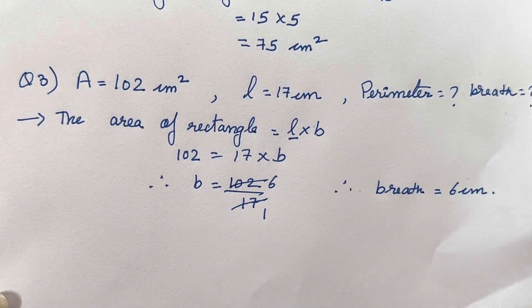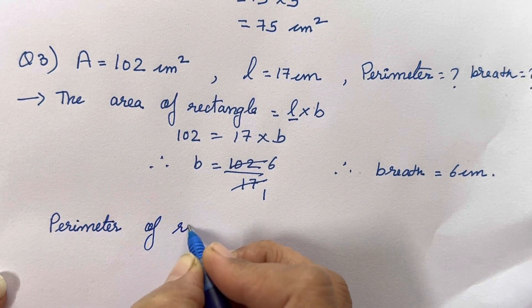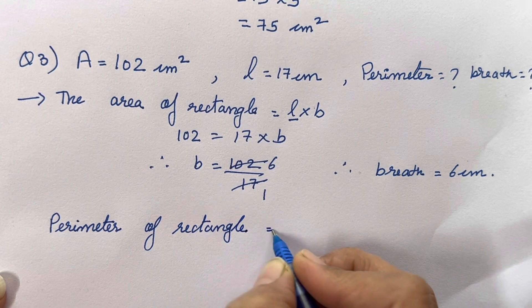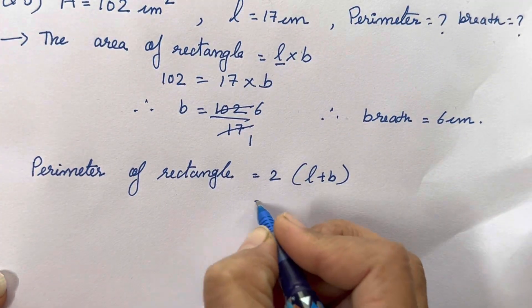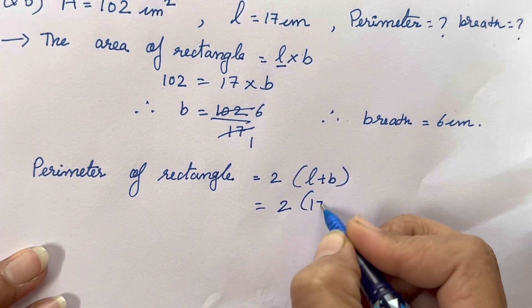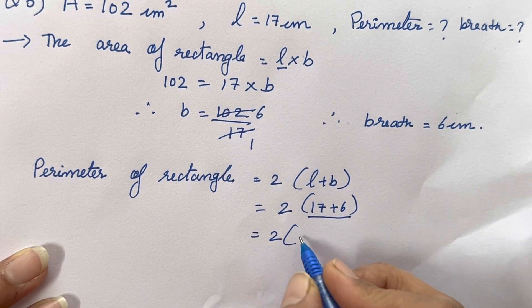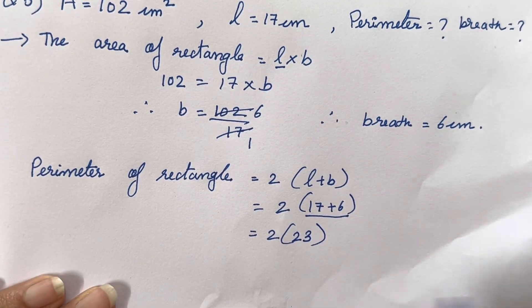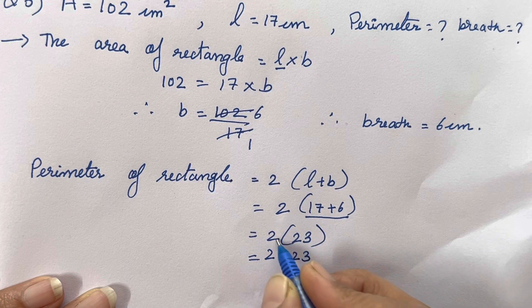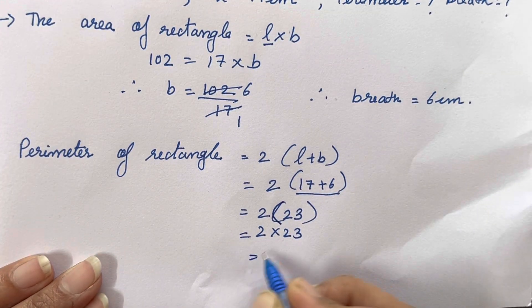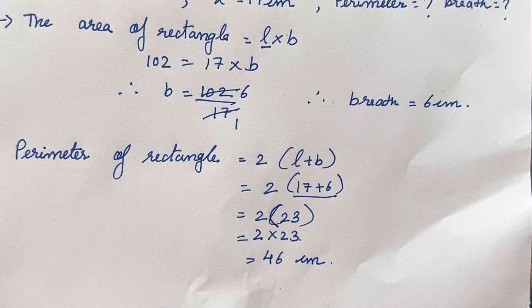Now what is left? Perimeter is left. The formula for perimeter of a rectangle is: perimeter = 2 × (length + breadth). So this will be 2 × (17 + 6). Breadth is 6, which we just found. First we add: 17 plus 6 is 23. Now many of you make a mistake here — you directly add without multiplying. There is a multiplication sign before the bracket, so 2 times 23 is 46 centimeter.